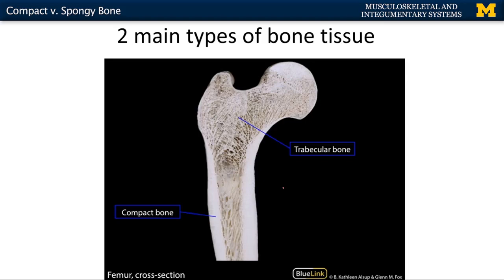Let's look at an actual bone. This is a femur that has been sagittally sectioned, and it's really nice in terms of showing the two different types of bone. You can see what I'm talking about with these trabeculae — these little spines of bone — which make up the trabecular or spongy bone. And then you can see this much denser compact bone making up the strong portion of the diaphysis, or the shaft of the bone.